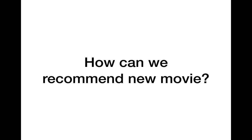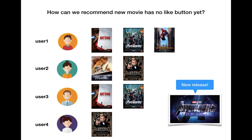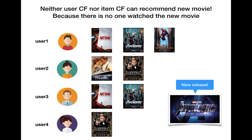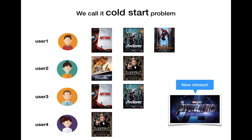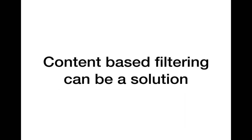Next question: how can we recommend a new movie? Say it's April 2019 and Avengers: Endgame has not been released yet. Once it's released, how can we recommend it to users? Neither user-based nor item-based collaborative filtering can recommend a new movie, because no one has watched it and there are no likes. We call this the cold start problem. The answer is content-based filtering.